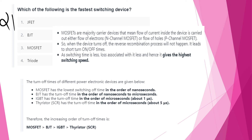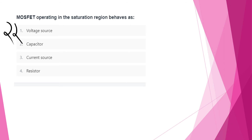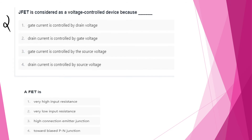Which of the following is the fastest switching device? In power electronics, MOSFET has the lowest switching turn-off time. BJT operates in the order of nanoseconds to microseconds, and IGBT operates in the order of microseconds. MOSFET operating in the saturation region behaves as a current source.